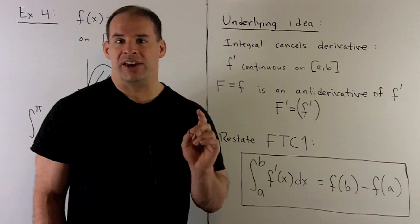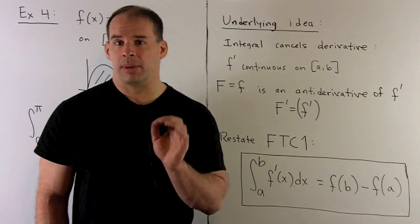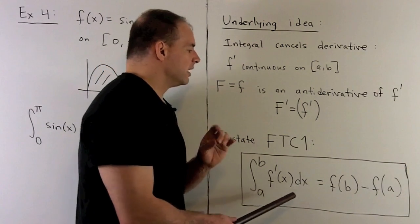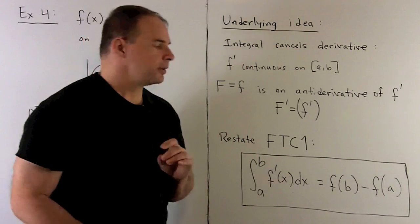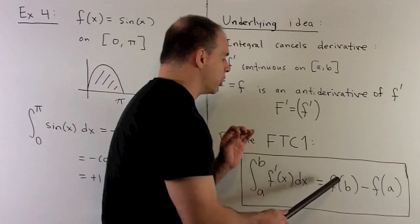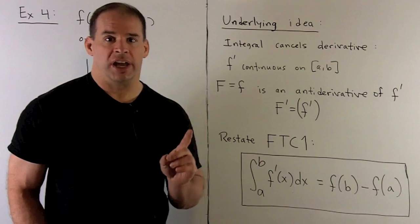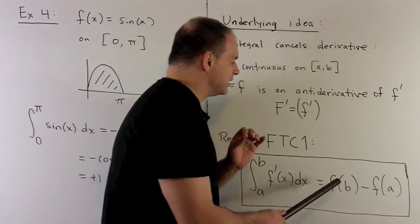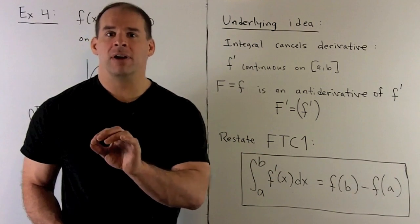Putting those two functions in the correct spots in the Fundamental Theorem of Calculus, what comes out is: the definite integral from a to b of f prime with respect to x equals little f of b minus little f of a. There's no reference to antiderivatives in our statement — it's just a relation between the derivative and the function itself. In a certain sense, integration is canceling out differentiation: if we integrate a derivative, we get back a difference of our function evaluated at two points.